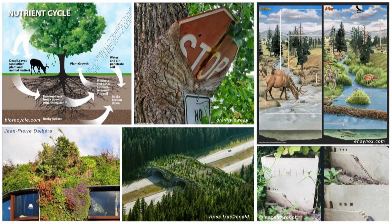This image — found on Instagram or Twitter — shows something as simple as a stop sign nailed on a tree creating a wound, disrupting resource cycling and transport for that tree. The tree itself has a disruption in its transport simply from a stop sign being nailed onto its trunk.